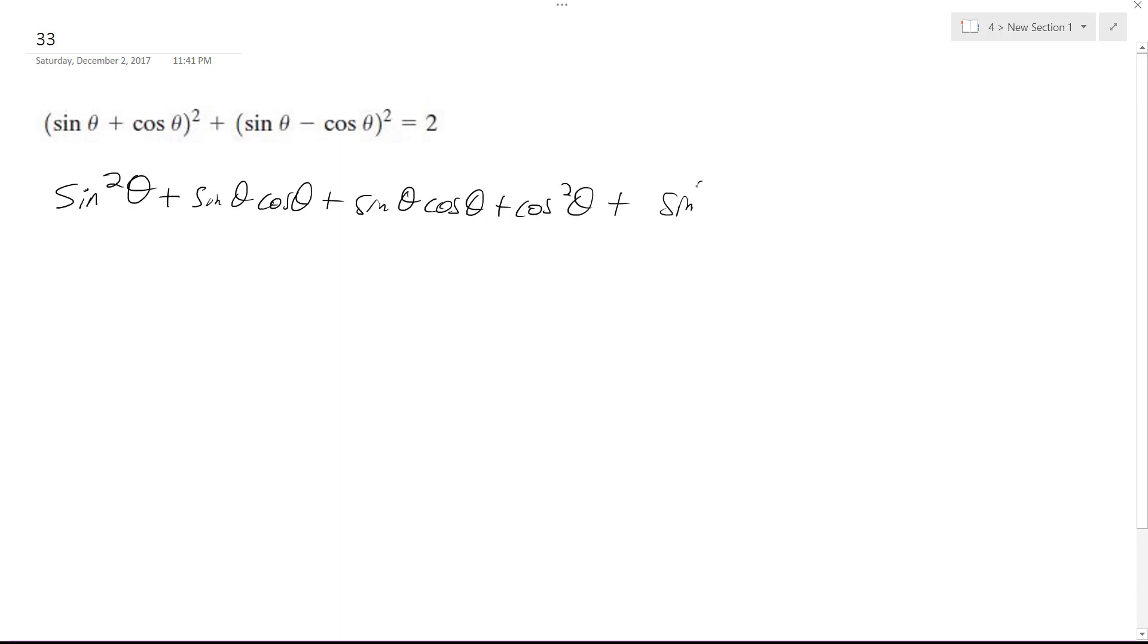The second part I get plus sine squared theta. I'm going to combine them: minus two sine theta cosine theta and then plus cosine squared theta equals two.